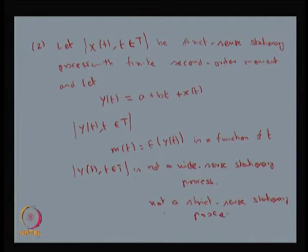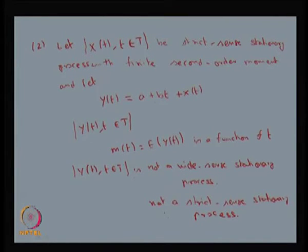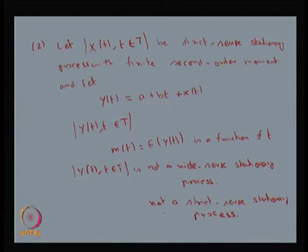From this example we can conclude that whenever you have a strict sense stationary process X(t) and you form Y(t) = a + bt + X(t), the resulting process Y(t) is not going to be a wide sense stationary process nor a strict sense stationary process.